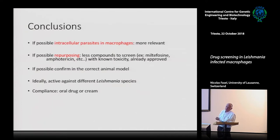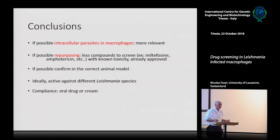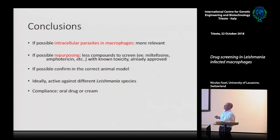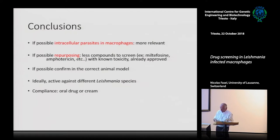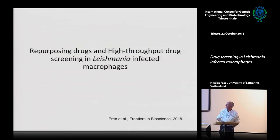If you already have FDA-approved compounds, you can repurpose drugs like miltefosine and amphotericin B — in fact, most drugs currently used are repurposed; there are no new drugs except one in development. Ideally your drug should be active against different Leishmania species and could be an oral drug or cream, which would be better than an IV-injected drug. That's why we started doing repurposing.